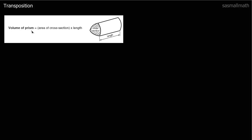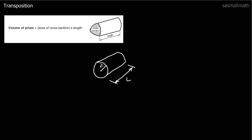Now we've got this formula: volume of a prism equals the area of the cross section times its length. This is given on the formula sheet so you don't need to remember it. Let's take a cylinder as a type of prism. The cross sectional area is pi r squared, so the volume equals pi r squared times l — area of the cross section times its length.